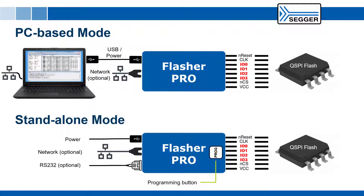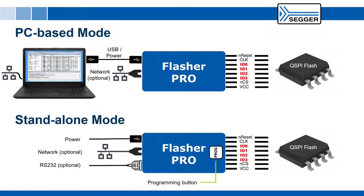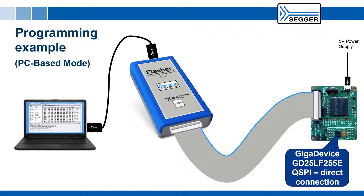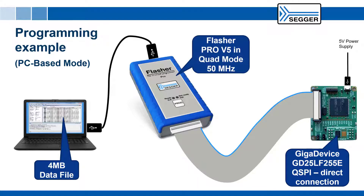The Flasher Pro can program QSPI Flash in standalone mode with the push of a button, controlled remotely, or controlled by a PC. As an example, let's program an empty Gigadevice GD25LF255E QSPI Flash with 4 MB of test data at 50 MHz in Quad Mode, connected directly to the Flasher Pro using the SEGGER JFLASH SPI programming software.